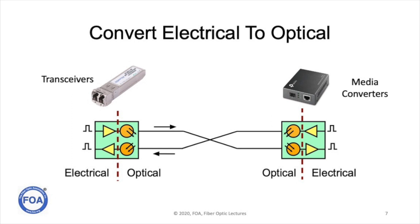There are essentially two types of devices that make the electrical to optical conversion. One is called a transceiver — a module typically included in a piece of communications equipment that includes a laser transmitter and a photo detector that interfaces to the electronics. A media converter is a self-contained converter designed to convert from one communications protocol, like ethernet, to fiber optics, transmit it to another location, and convert back to ethernet, completing a full fiber optic link.